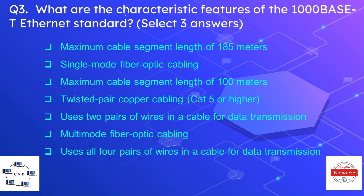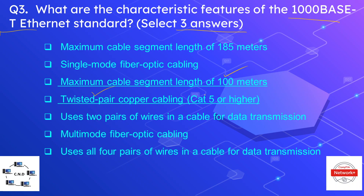Question number three: what are the specific features of the 1000BaseTX Ethernet standard? Select three answers. The correct options are: a maximum cable segment length of 100 meters, use of twisted pair copper cabling of Cat 5 or higher, and use of all four pairs of wires in the cable for data transmission.